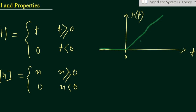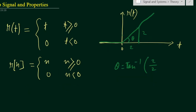What will be the angle of this straight line? If we consider the right angle triangle, theta equals tan inverse of (y/x), which is tan inverse of (2/2), that is tan inverse of 1, which equals 45 degrees. So this ramp signal makes an angle of 45 degrees with both axes.